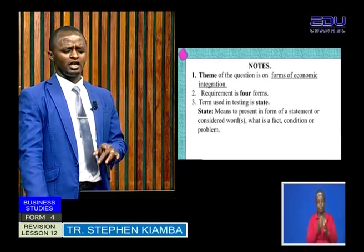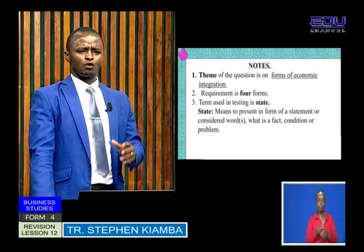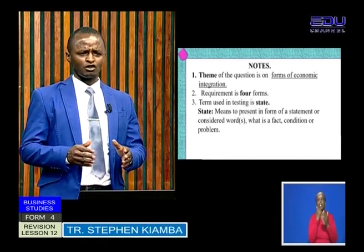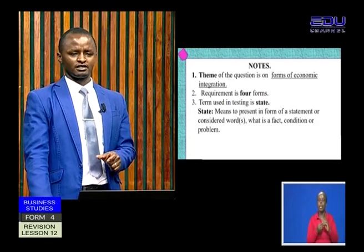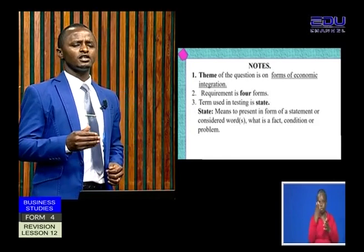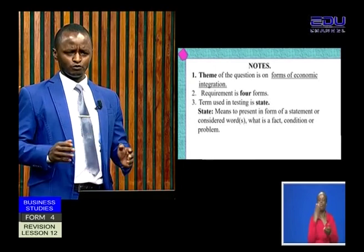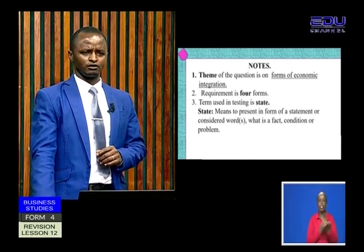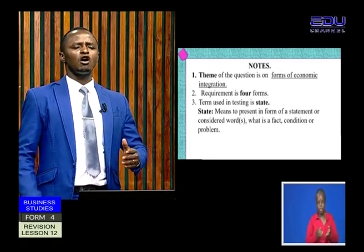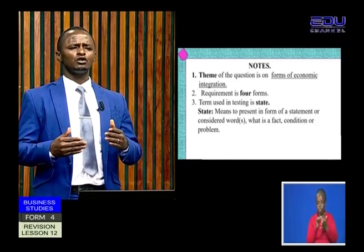Number two: examine the requirement in the question. Usually the requirement is in a numerical form, either in figures or in words. In our case, it is four, because the question requires you to give four forms of economic integration. Once you know the number required, it helps you know the limit so that you do not waste time giving many responses that are not necessary, although they might be correct.